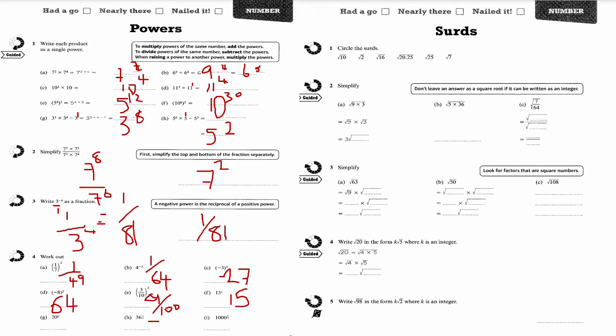This one says 36 to the power of a half. Power of a half means the square root, so square root of 36, which is 6. And then this last one says a thousand to the power of a third. Well, it's the cube root, the third root of a thousand. We just call it cube root, so cube root of a thousand is 10.